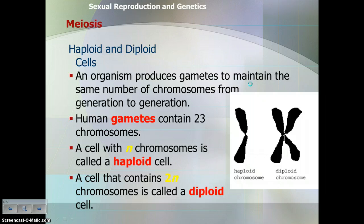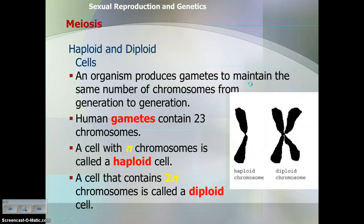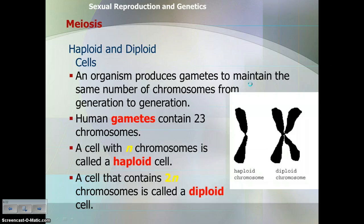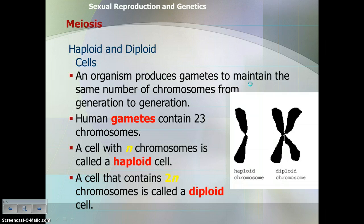When those gametes are combined during fertilization — when the egg and sperm come together — that chromosome number is restored to 46. A cell that has n number of chromosomes, or one set — in humans that's 23 chromosomes — is called haploid. If a cell has two sets of chromosomes, one from mother and one from father, we call that a diploid cell. Di meaning two sets; haploid, think of half the number of chromosomes. Every cell in your body is diploid except your gametes — sperm in males and eggs in females are haploid cells.